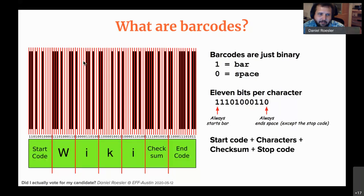Combining those ones and zeros, there's a start code signifying what you're encoding, then characters — in this case the barcode spells out 'wiki' — then a checksum, then a stop code. That's what a barcode reads to, and why I can't just use a regular barcode scanner will become relevant later.